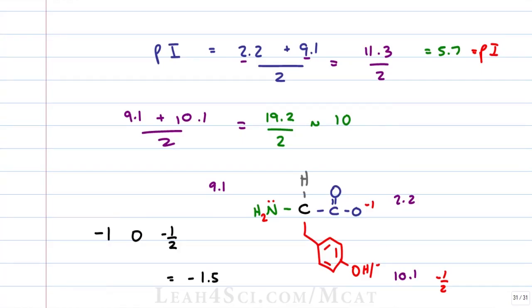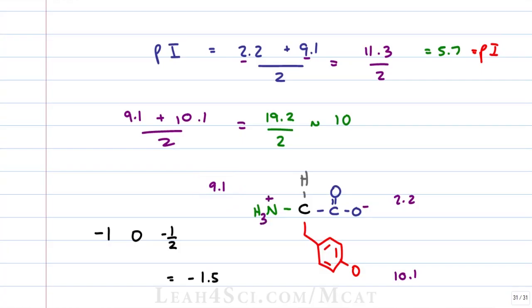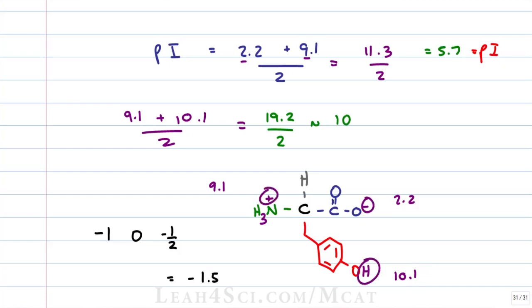Let's prove our calculated value of 5.7 is correct, estimating it as pH 6. pH 6 is greater than pKa 2.2 — the carboxy deprotonates for minus one. pH 6 is less than pKa 9.1 — the amine is protonated for plus one. pH 6 is less than pKa 10.1 — the side chain is protonated for a charge of zero. Adding: minus one plus one plus zero gives a net charge of zero — exactly what we expect at the isoelectric point.